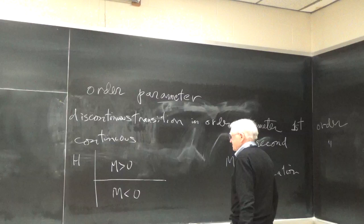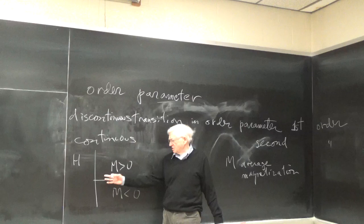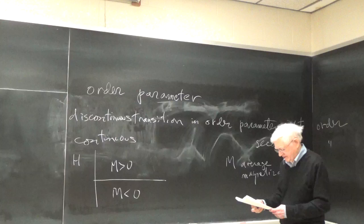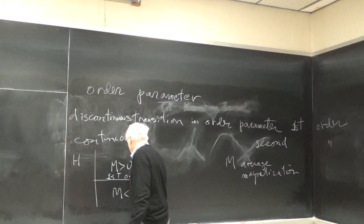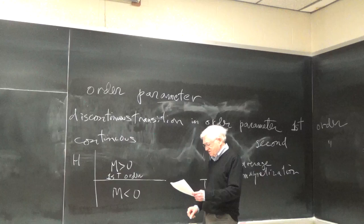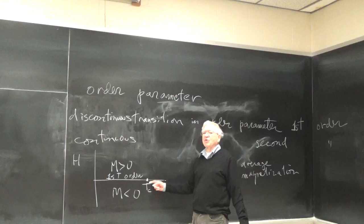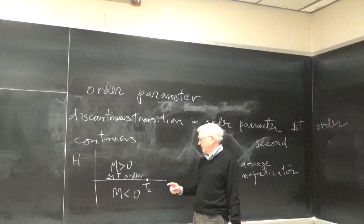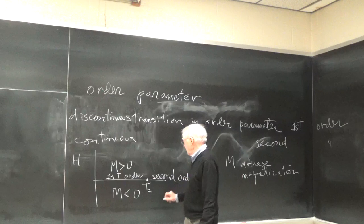The average spin direction can be positive or negative. As you switch from small positive to negative external fields, the magnetization shifts from positive to negative, or negative to positive. This is a first-order transition. As you raise the temperature, you get to a certain point called the critical point, in which the system no longer responds dramatically to small changes in the external field — it becomes second order.